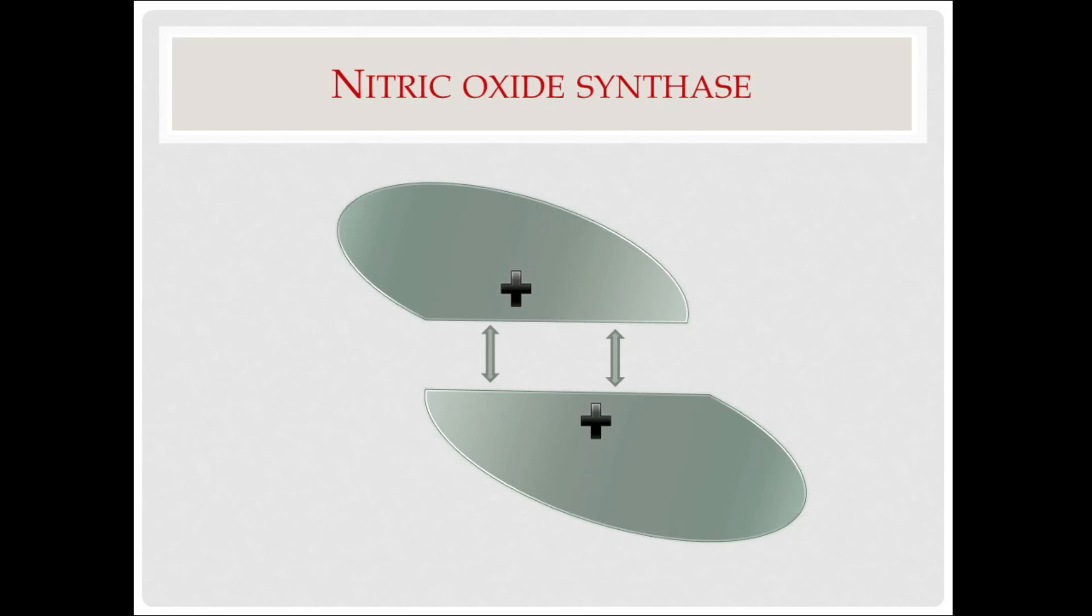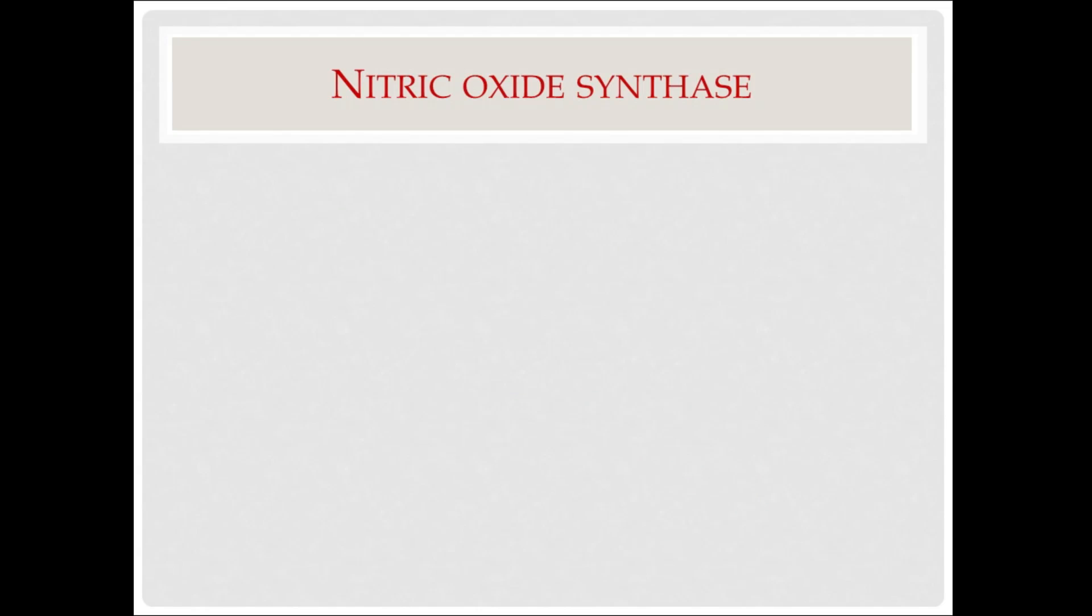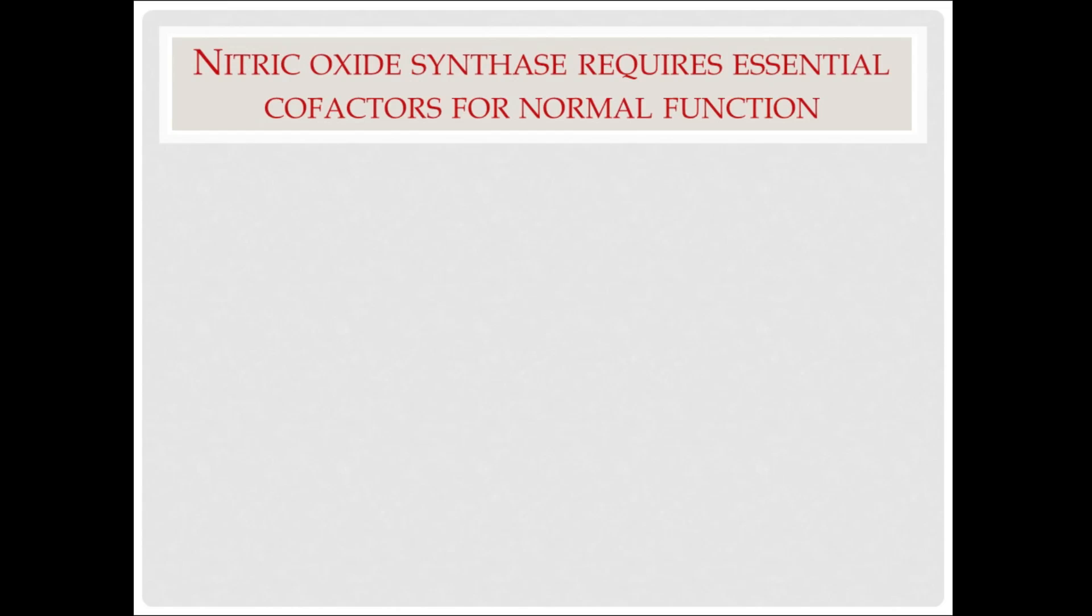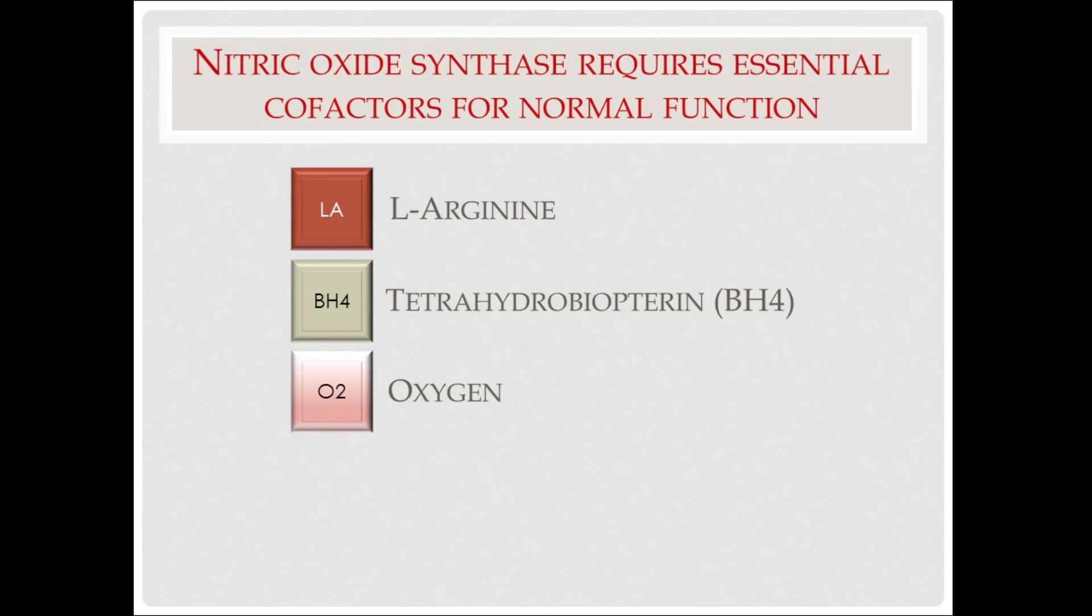In order to function normally, nitric oxide synthase requires four essential cofactors, or chemicals. If any of these cofactors are in short supply or missing, the NOS enzyme cannot function normally. These are L-arginine, or LA, tetrahydrobyoperin, or BH4, oxygen, listed as O2, and NADPH, which is simply an energy currency in the body.